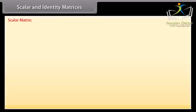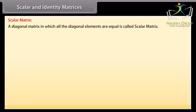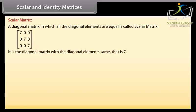Scalar and identity matrix. Scalar matrix: A diagonal matrix in which all the diagonal elements are equal is called scalar matrix. Look at this matrix. It is the diagonal matrix with the diagonal elements same, that is, 7. Therefore, it is a scalar matrix.